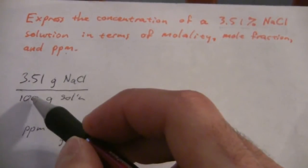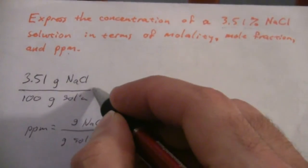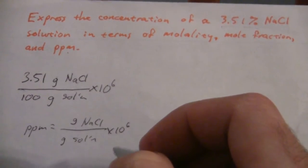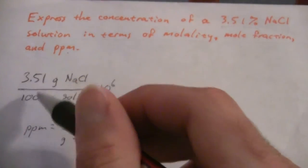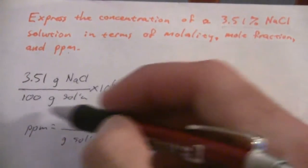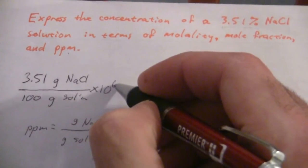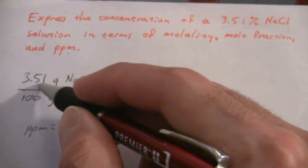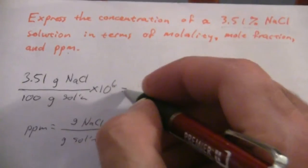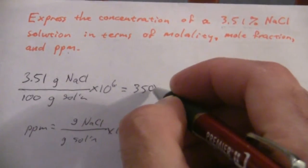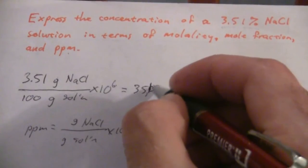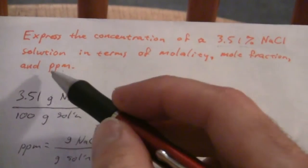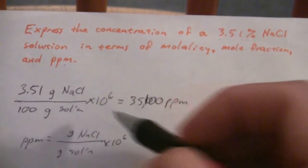To get ppm, all we do is take this and multiply it by 10 to the sixth. Since this is divided by 100, that makes this times 10 to the 4, and so it'll be 35,100 ppm. So converting between percent and parts per million is really quite straightforward.